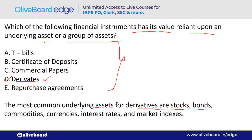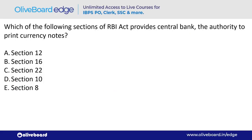Which section of the RBI Act provides the central bank authority to print currency notes? The answer is Section 22 — option C. Sections of acts are important for banking exams.